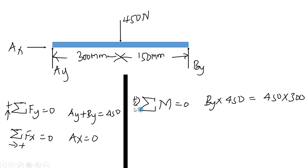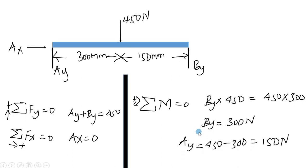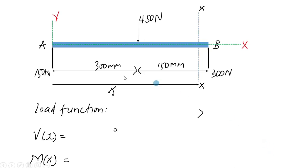Taking moments about A and setting them equal to zero: By times 450 mm in the anticlockwise direction equals the 450 N force times 300 mm in the clockwise direction. This gives By equals 300 N. Substituting back into the vertical equilibrium equation gives Ay equals 150 N. We now have reactions of 150 N at A and 300 N at B.